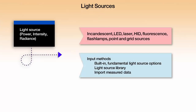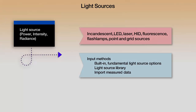In establishing a light source in the system, we can have incandescent sources, light emitting diodes, lasers, HID, and many other kinds of point sources. The input methods include a built-in library and some fundamental primitive light source options in ASAP, as well as importing measured data and then fitting a source description to those data.